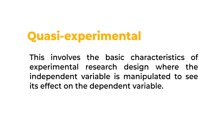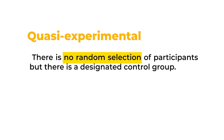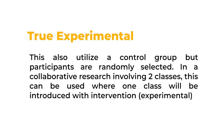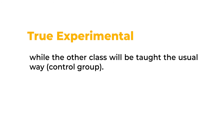In quasi-experimental design, the independent variable is manipulated to see its effect on the dependent variable. There is no random selection of participants, but there is a designated control group. In true experimental design, there is a control group and participants are randomly selected. In a collaborative research involving two classes, one class will be introduced to the intervention as the experimental group, while the other class is taught the usual way as the control group. Pre-experimental and quasi-experimental are commonly used in action research because grouping and randomization require ethical considerations involving both participant and non-participant members of the class.